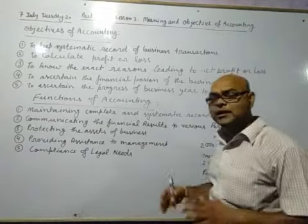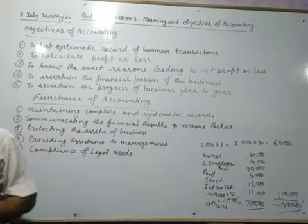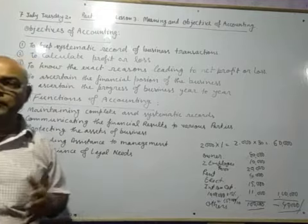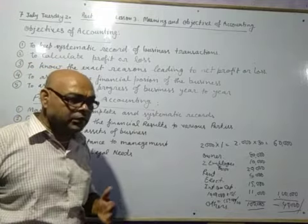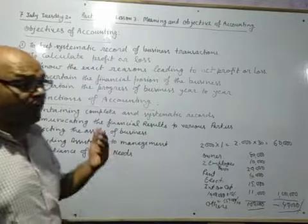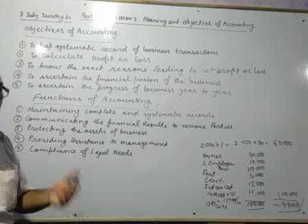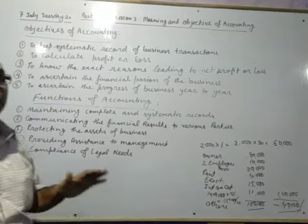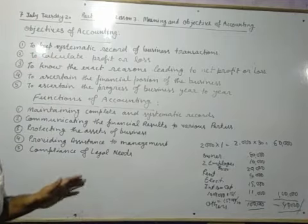Overall, the assets are equal to liabilities plus capital. So if the value of capital is more than liabilities, he will be able to pay his liabilities easily, and their financial position will be strong. But if the liabilities are more than capital, his financial position is weaker and he is not in a position to return the money within time.